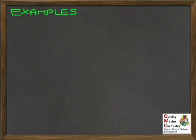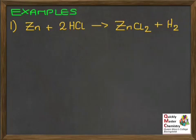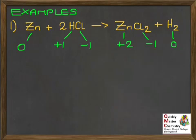Let's see how this works with an example. We'll take the reaction between zinc and hydrochloric acid to make zinc chloride and hydrogen. The question here is: what has been oxidised, what has been reduced — explain using oxidation states. Our very first step will be to work out the oxidation state of everything in both the reactants and the products. Applying the rules we've already learnt, we should come up with these values. Pause and take a look to make sure they match what you'd expect.